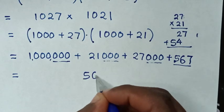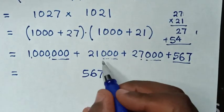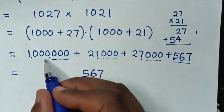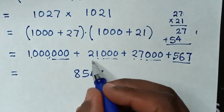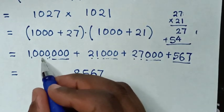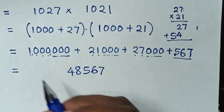Then the total will be: the last three digits are 567. Then 7 plus 1 is 8, 2 plus 2 is 4. So we get 1,048,567.